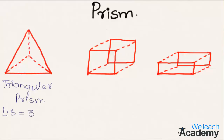Coming to the total surfaces: total surfaces include the lateral surfaces plus top and bottom. Here we have only the base (one surface), so the total surfaces of the triangular prism equal four — that is three lateral surfaces plus one base.